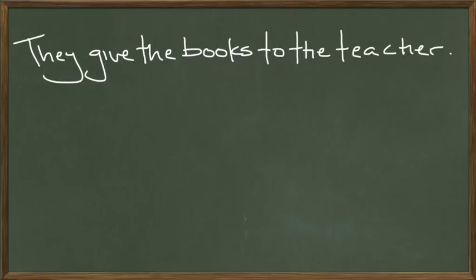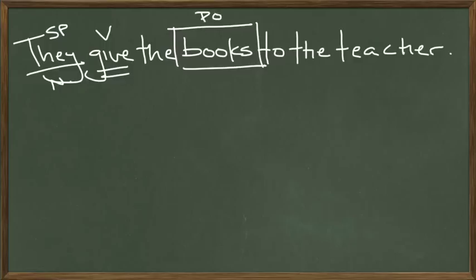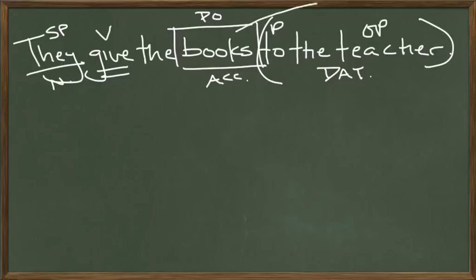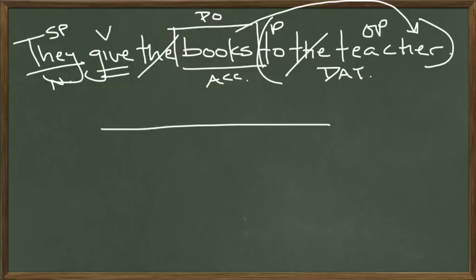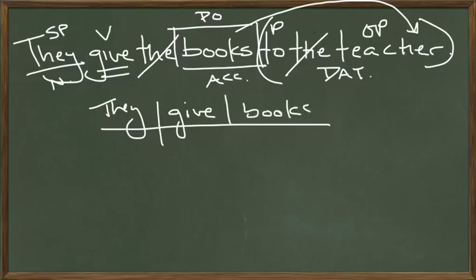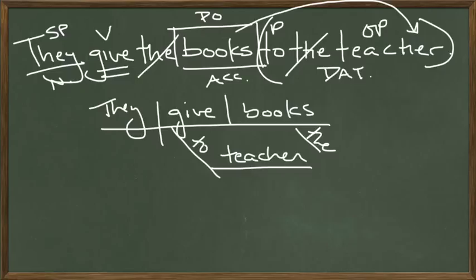They give the books to the teacher. They is the subject, nominative case. They're giving — verb. They're giving books — direct object, accusative case. To whom are they giving the books? To the teacher — prepositional phrase. This one goes in the dative case because the books are going to the teacher, making the teacher the indirect object. We diagram it: they give books, and the indirect object phrase goes below the verb — 'to' on the slanted line with a tail, then teacher with the article.